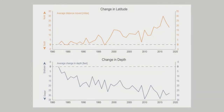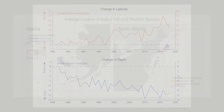This graph shows the annual change in latitude, shown by the orange line, and depth, shown by the blue line, of 140 marine species along the northeastern U.S. coast and in the eastern Bering Sea. These show that overall, fish and shellfish in these regions are moving northward and deeper to cooler waters.